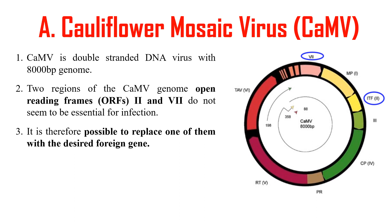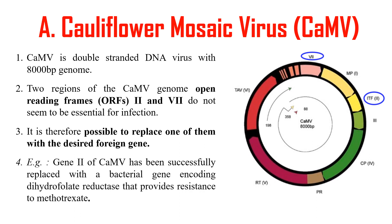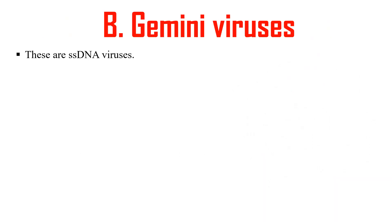By replacing these ORFs with desired genes, we can use this virus as a vector for plant transformation. An example is that the genome of CaMV was successfully modified with a bacterial gene encoding dihydrofolate reductase, which provides resistance to methotrexate. Next is the gemini virus — these are single-stranded DNA viruses.